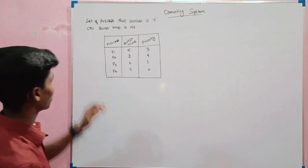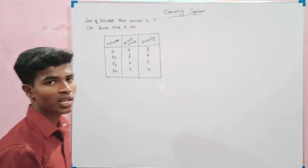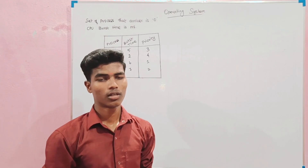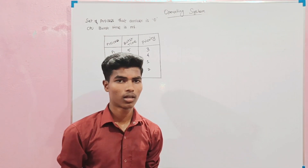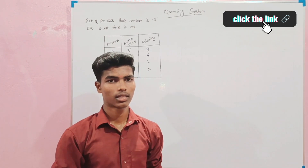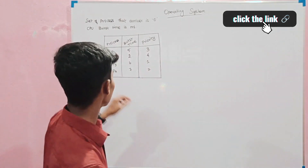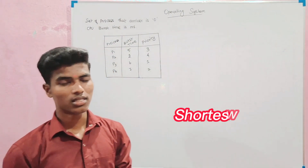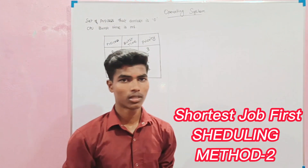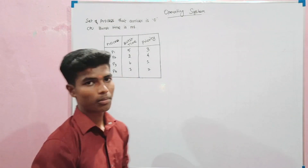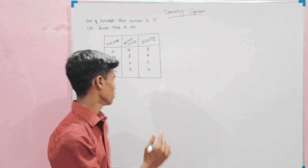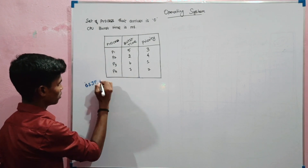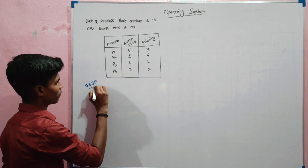If you already want to understand the first-in first-out process, there is a detailed video linked in the description. Now, how to find SJF — this is the second method. First one is SJF: Shortest Job First.